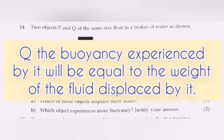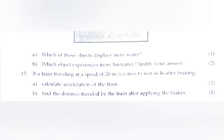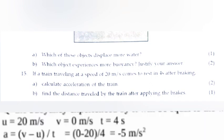Question 15: If a train traveling at a speed of 20 m/s comes to rest in 4 seconds after braking. (a) Calculate the acceleration of the train. Answer: u = 20 m/s, v = 0 m/s, t = 4 seconds. a = (v - u)/t = (0 - 20)/4. Answer is -5 m/s².